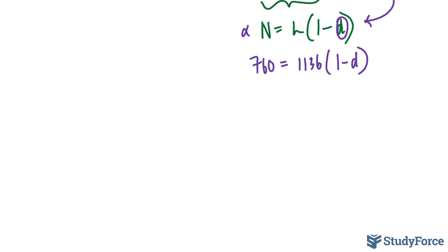We can solve for d by first dividing both sides by the 1136 factor. That cancels out. Don't evaluate this just yet. Just leave it as a fraction, an exact form. And instead, on the right side, we now have 1 take away d.